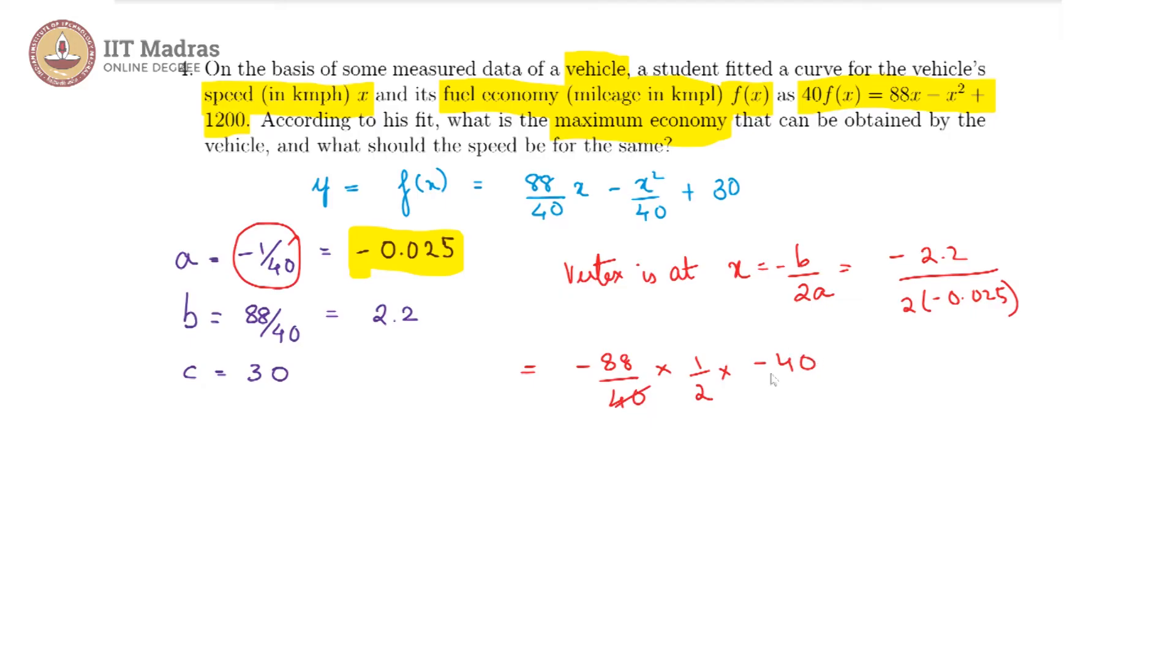We have the 40 and the 40 cancelling off and minus minus become plus 2 and 88 will give us 44. So we have the vertex, that is we get the maximum fuel economy at a speed of 44 kilometers per hour.